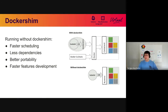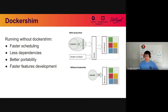With this direct call into runtime through container runtime interface, you get a little bit faster scheduling because you don't have the overhead of Docker. You have fewer dependencies on your machine and better portability of your environment. We also get faster feature development as a benefit, because now with Docker removed, we only need to concentrate on a few runtimes, and this will make feature development faster and test coverage of this feature better.